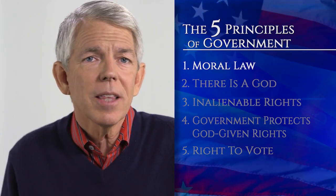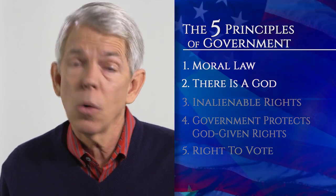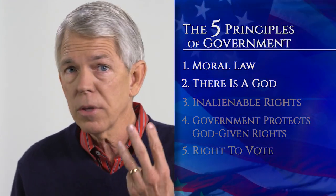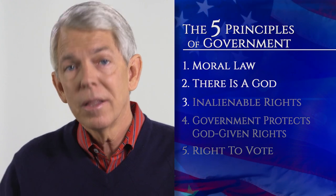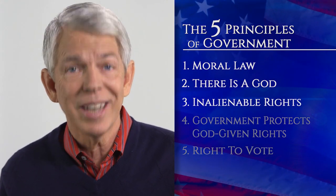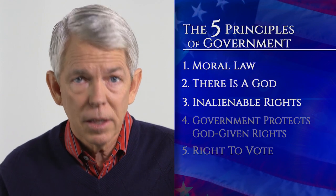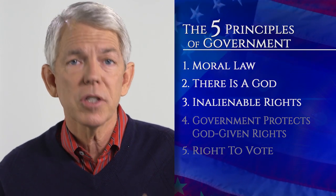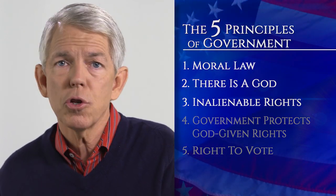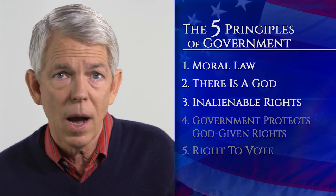The second thing says, by the way, there is a God — so we acknowledge that there is a creator. The third thing the Declaration tells us is that God gives us a certain set of inalienable rights, like life and liberty, and the right of self-defense and the right of association and free speech. Those are God-given rights.